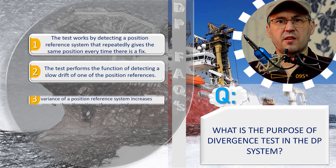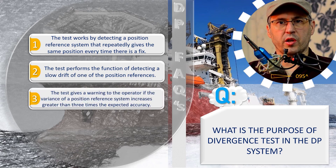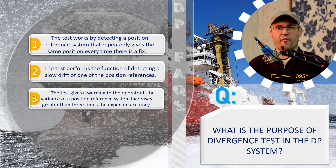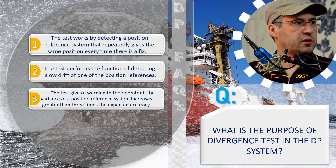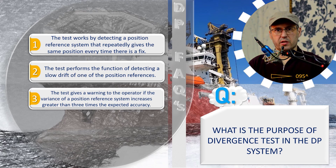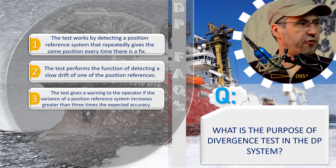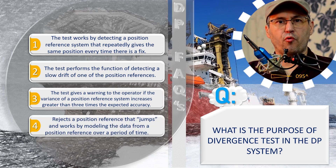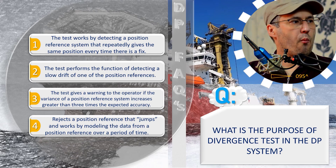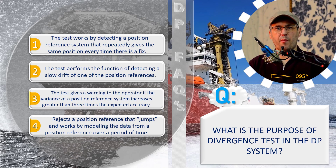Variant 3: the test gives a warning to the operator if the variance of a position reference system increases greater than three times the expected accuracy. Variant 4: rejects a position reference that jumps, and works by modeling the data from a position reference over a period of time.